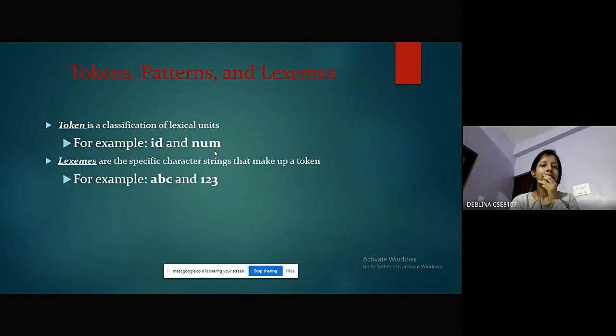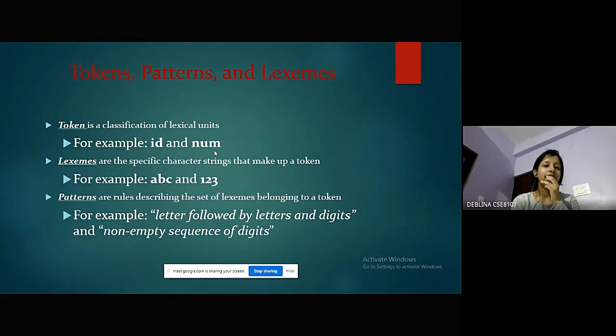Tokens, Patterns, and Lexemes: Token is a classification of lexical units, for example, id and num. Lexemes are the specific character strings that make up a token, for example, abc and 123. Patterns are rules describing the set of lexemes belonging to a token, for example, the letter followed by letters and digits and non-empty sequence of digits.